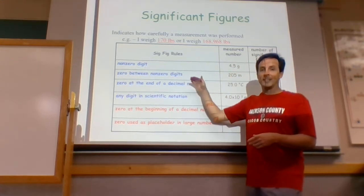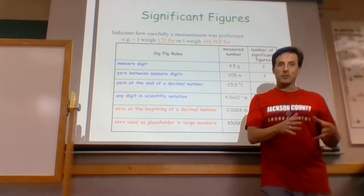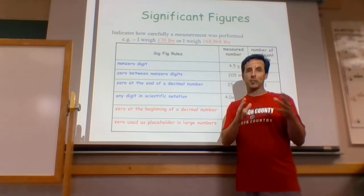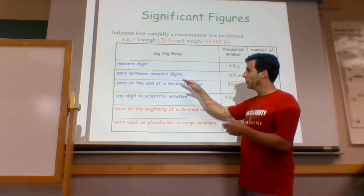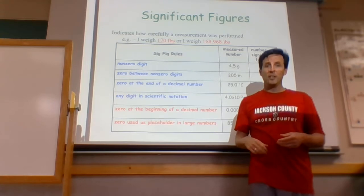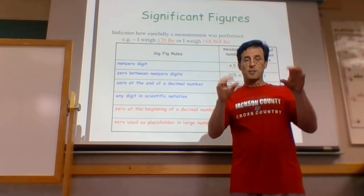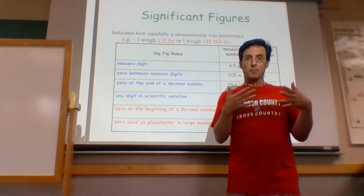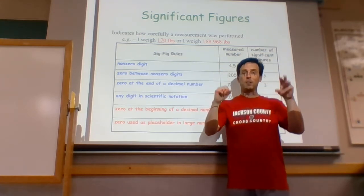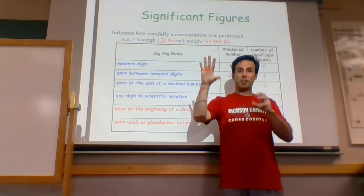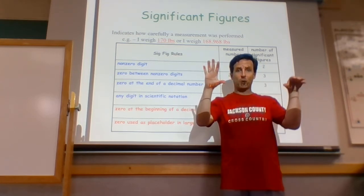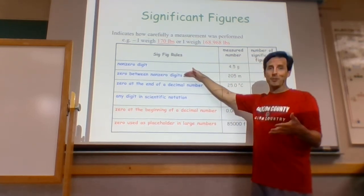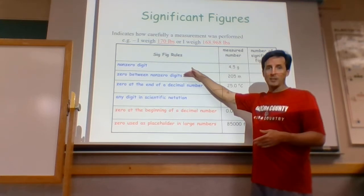Where it gets a little messy is when I think about zeros. There are three different cases where I have to decide whether a zero is significant or not. The first one is the easiest: if a zero is in between two non-zero digits, like 404, the zero in the middle has to be significant. From the first sig fig to the last, everything in between counts. These are called trapped or captured zeros — they're always significant.